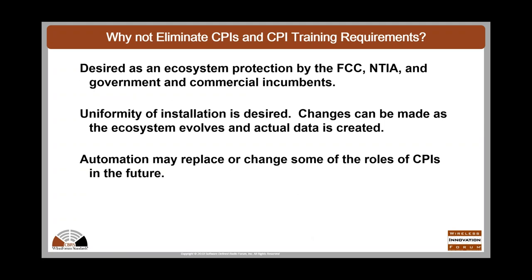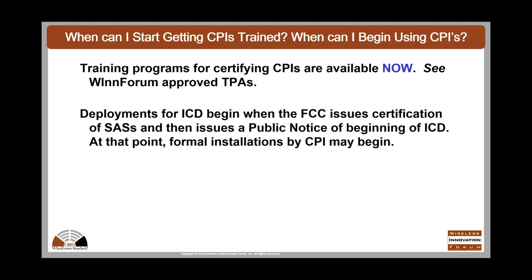Why shouldn't we just eliminate CPIs to reduce cost and complexity? The importance of protecting incumbents — both government and commercial — requires accurate information so interference doesn't take place. That is the critical reason CPIs exist. Uniformity in the system is absolutely critical. We do expect some automation in the future which may change the CPI's role, but the critical nature of the CPI remains. Deployment for Initial Commercial Deployment, ICD, will begin as soon as ICD starts — which should be fairly soon, within the next couple of months — based upon FCC certification and public notice.